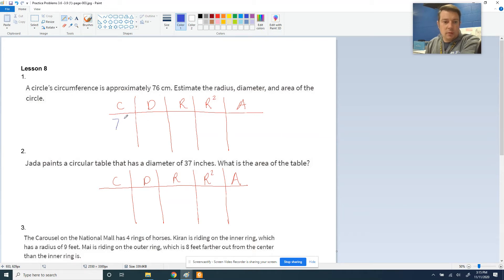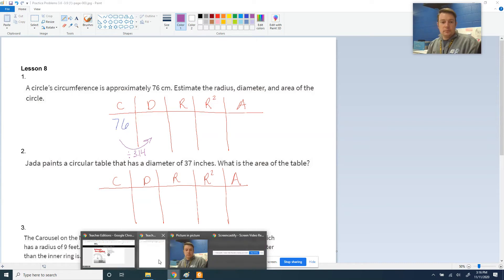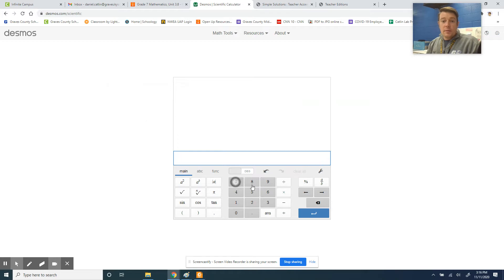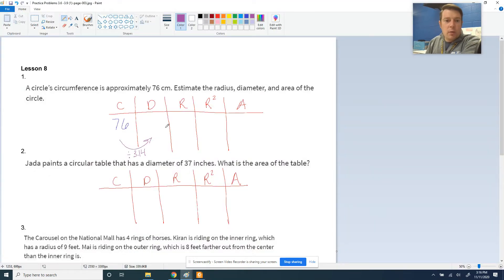76 is my circumference, so that goes here. And I've got to do radius, diameter, and area. So we start with how we go from circumference to diameter. We're going to divide 76 by pi, 3.14, and that gives us 24.2. We're going to round to the tenth there. So 24.2 is our diameter.